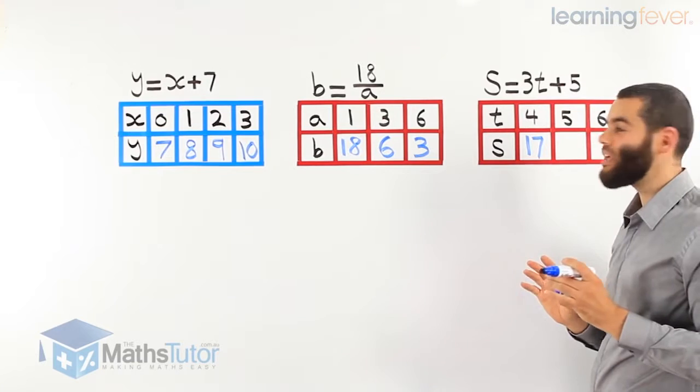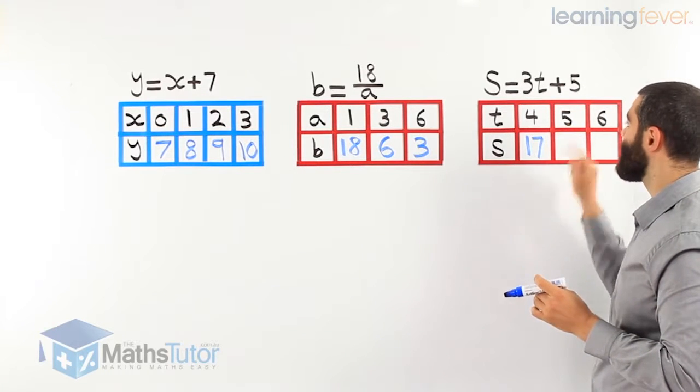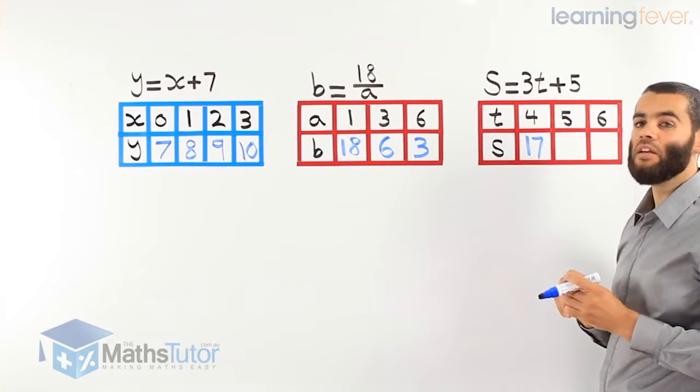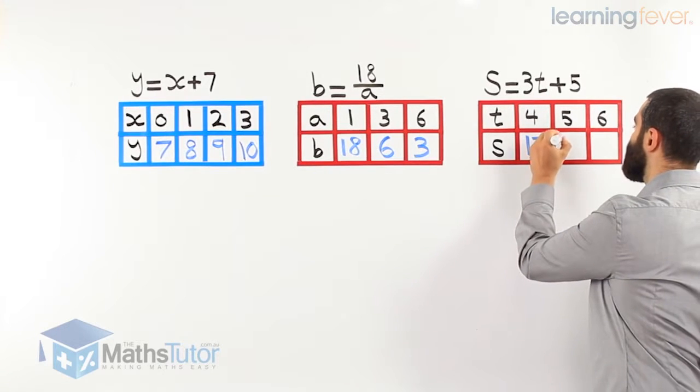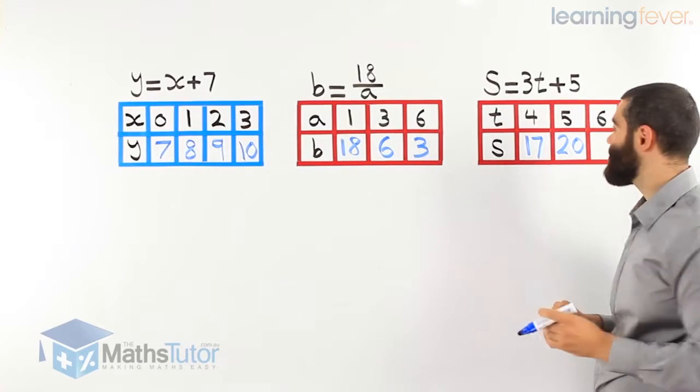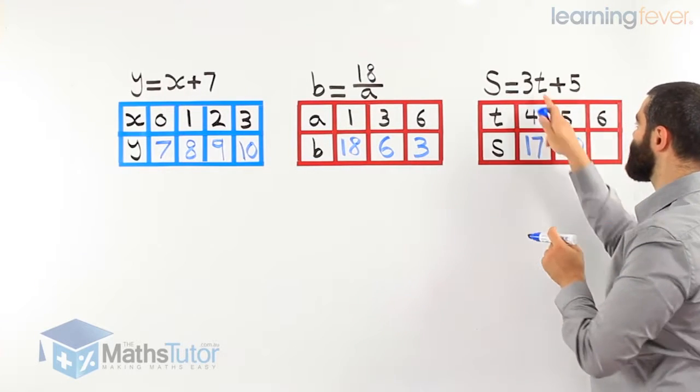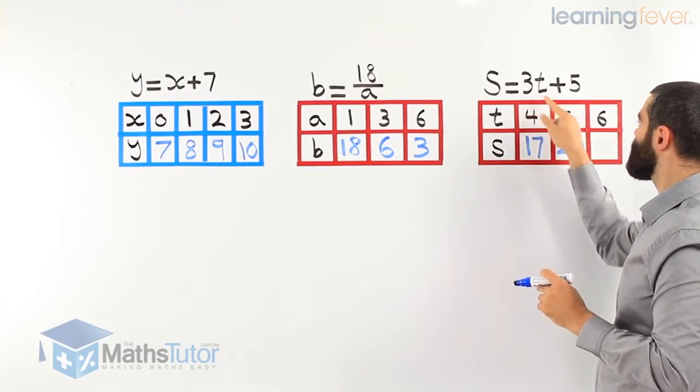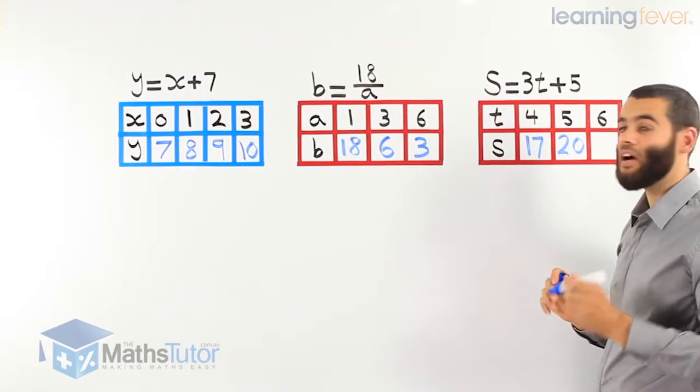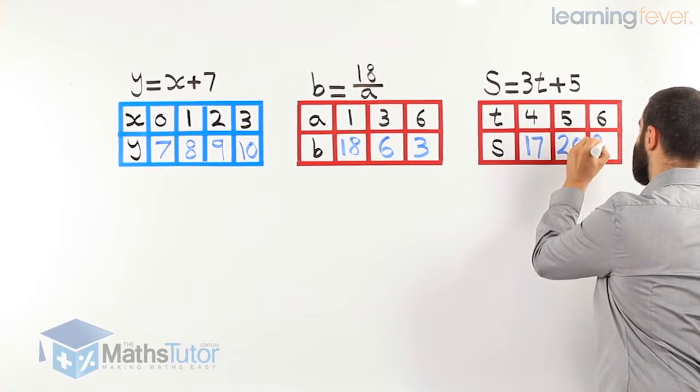Next one, what are we going to replace t with? 5. 3 times 5 is 15. 15 plus 5 is 20. And last one, we're going to replace t with 6. 3 times 6 is 18. 18 plus 5, our answer is 23.